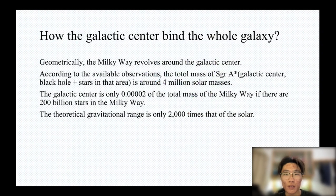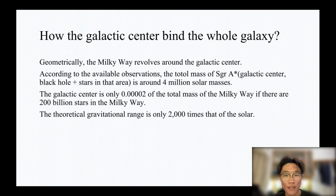Geometrically, the Milky Way revolves around the galactic center. However, the total mass of the galactic center and the stars around it is about 4 million solar masses, which is only 0.002% of the total mass of the Milky Way if there are 200 billion stars in the Milky Way.